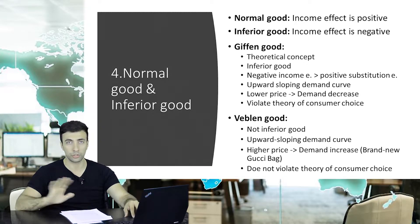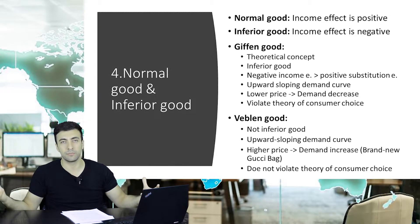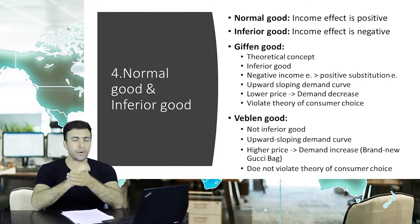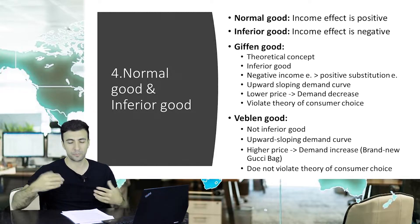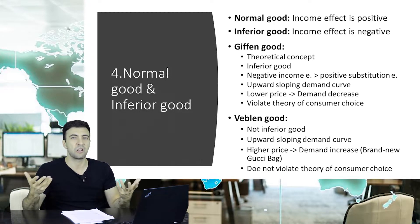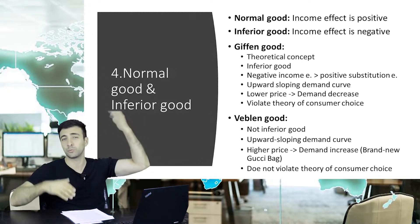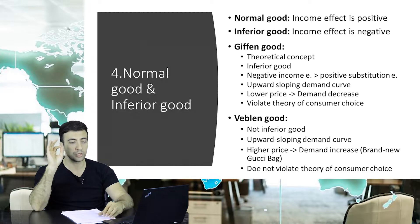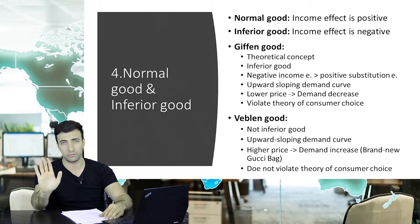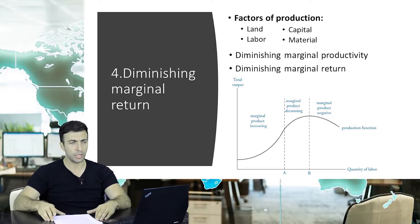Veblen goods, in contrast to Giffen goods, are not inferior goods. They also have an upward-sloping demand curve, but here higher prices increase demand. Normally higher prices should decrease demand, but think of a brand-new Gucci bag — the high price signals status, so people tend to buy more as the price rises. However, this has an end point; demand won't increase indefinitely at any price. Importantly, Veblen goods do not violate the theory of consumer choice and are a practical, real-world phenomenon — unlike Giffen goods.